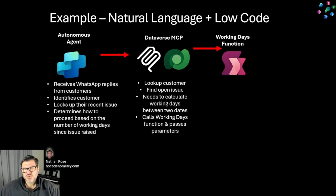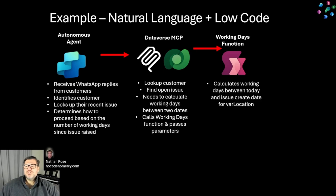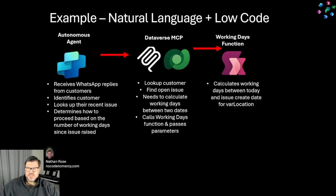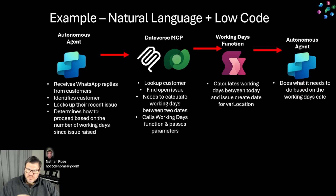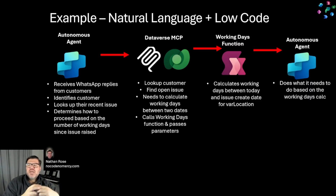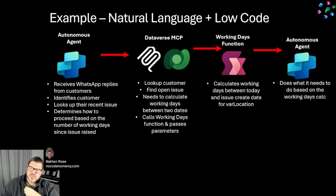This is where PowerFX functions enters the game. Our function can quickly and easily work out those working days. It also needs a location, so it calls an API, and based on the location and the dates, it comes back with the number of working days. Once it's done that, we go back to the agent, and the agent can continue on with its task based on that number. This is how we combine the autonomous agent, Dataverse MCP, and PowerFX functions to run specific logic we need.